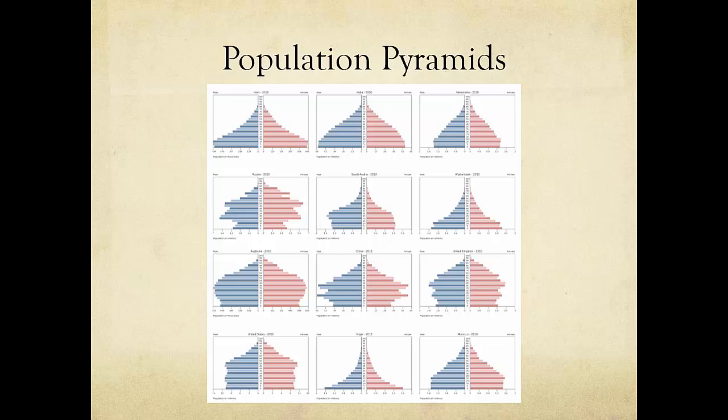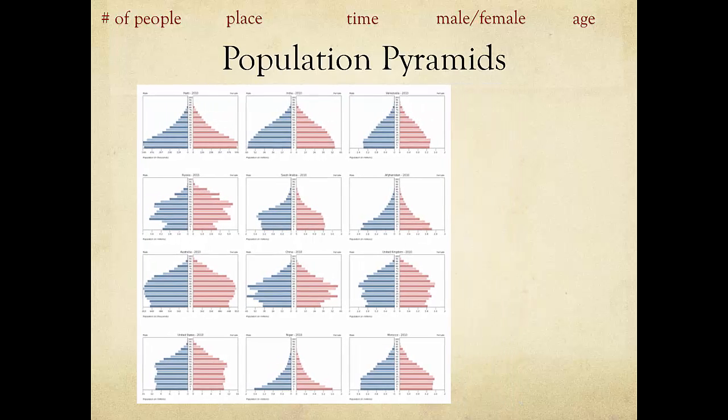A population pyramid is a graph that shows the number of people in a particular place, which is usually a country, at a particular time. The people in that place are organized by sex and age group. Population pyramids help geographers understand the population's age distribution.